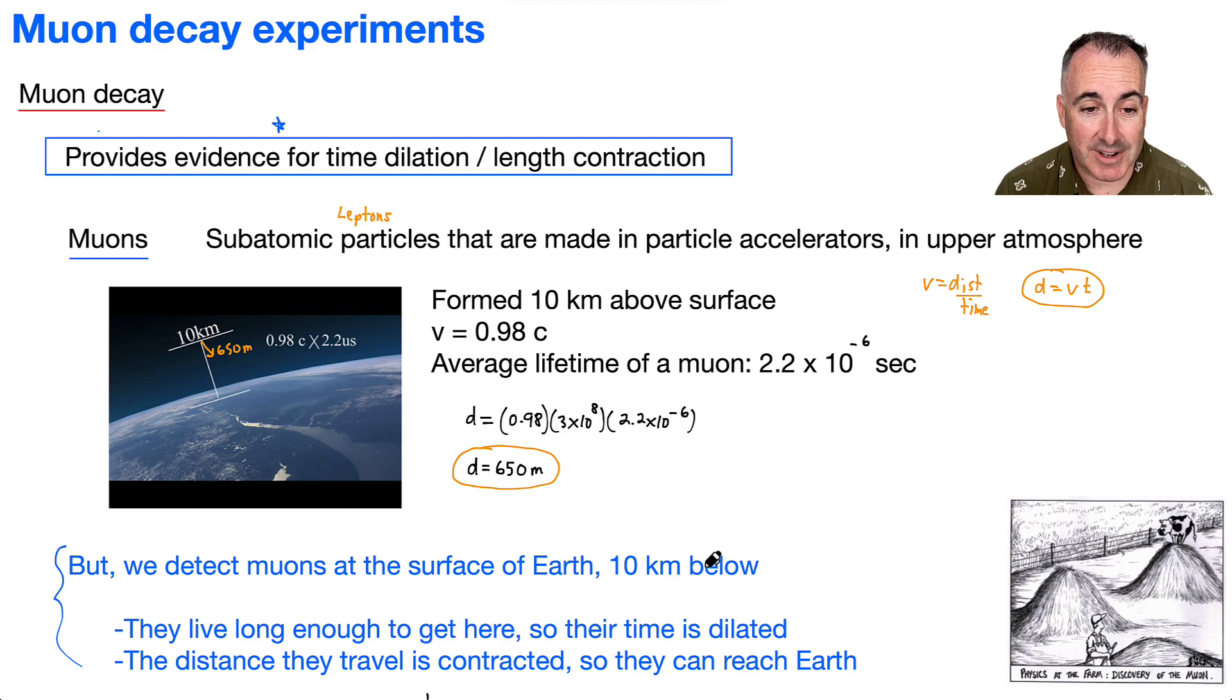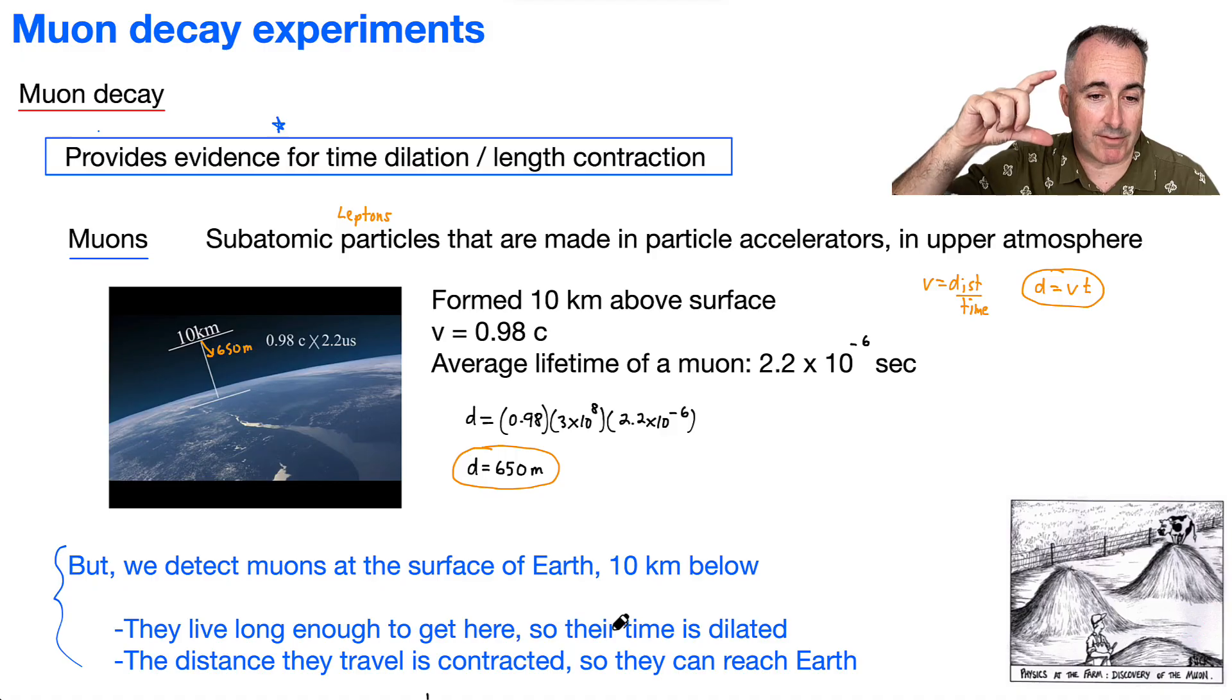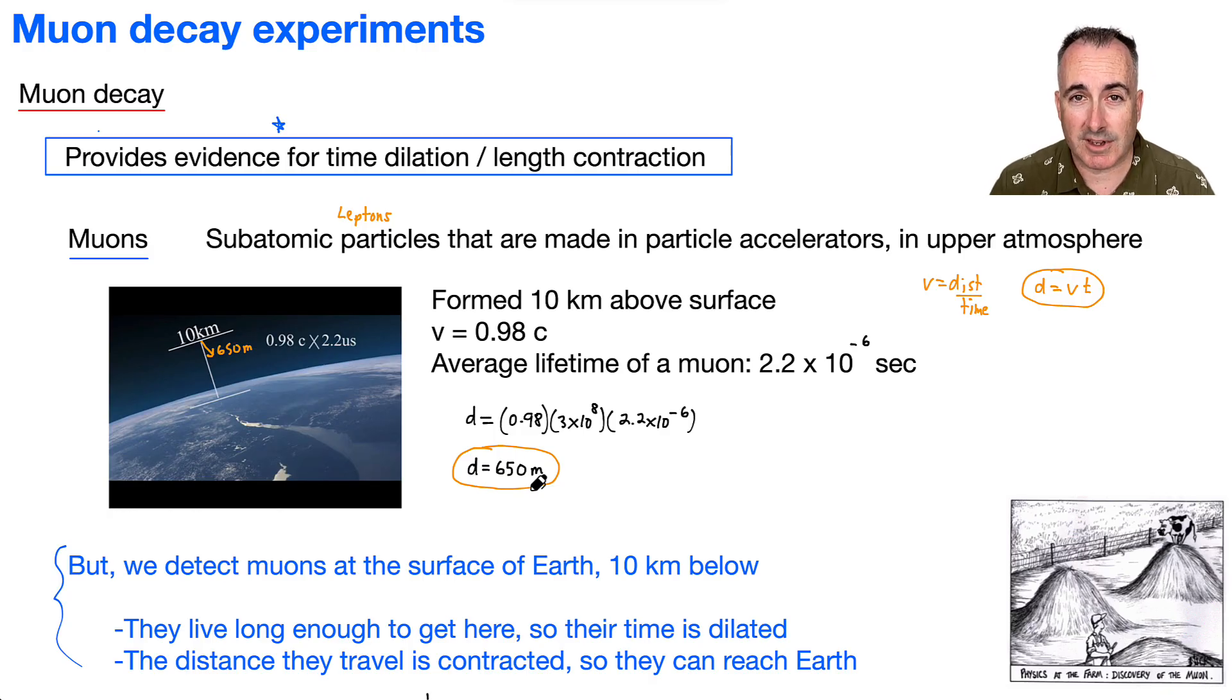Well, that's actually a nice proof that they do live long enough to get there, so they must have their time dilated. Or because there's two ways to explain it, you can say their time is dilated, or you can say the distance they have to travel is actually contracted, so that's how they reach Earth. Either way, those give you really good experimental evidence for the tenets of special relativity, or at least the results of it, which tell us that there is time dilation and there's length contraction.